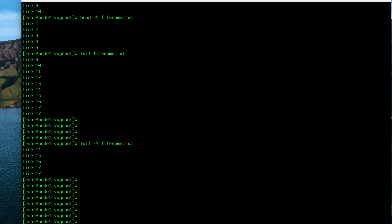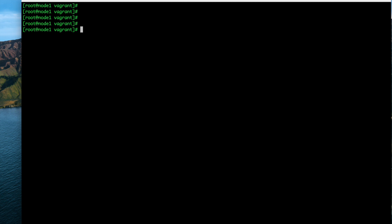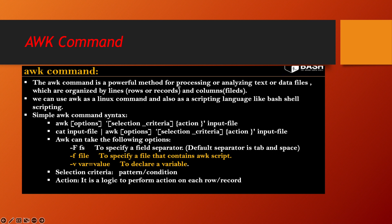Now there is a very important concept in shell scripting: the awk command. The awk command is a powerful method for processing or analyzing text or data files organized by lines, rows, or records. Each line is called a row or a record, and each column is called a field. We can use awk as a Linux command and also as a scripting language, but in our shell scripting we'll be learning awk as a command.